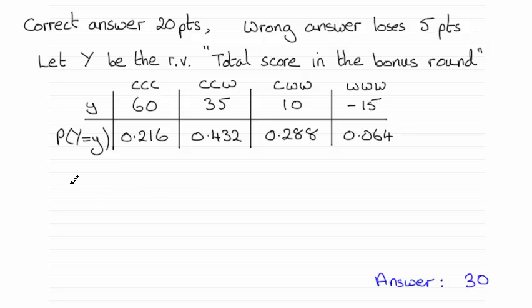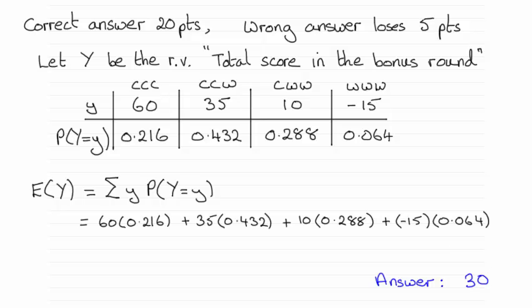So when it comes to working out the expected value for the score in the bonus round, E of Y, then we work it out in the usual way which is sigma of any observed value times its corresponding probability. So if you carry out that calculation then you should get something like this and then if you total that on your calculator you find the answer is 30. So that's the expected number of points scored in the bonus round.